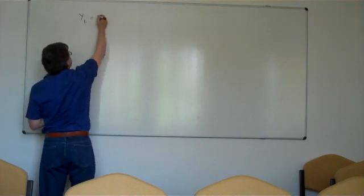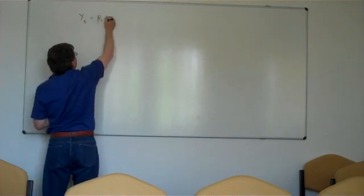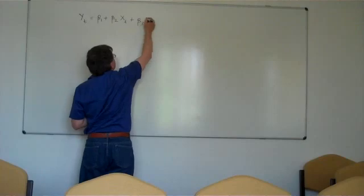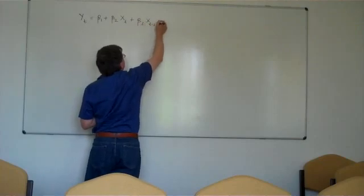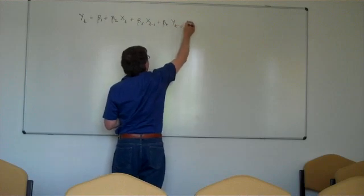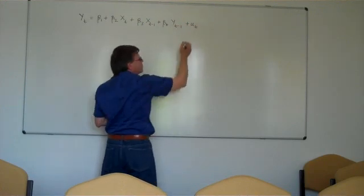So we have an equation of this form: Yt equals beta1 plus beta2 xt plus beta3 xt minus 1 plus beta4 yt minus 1 plus the random error term ut.